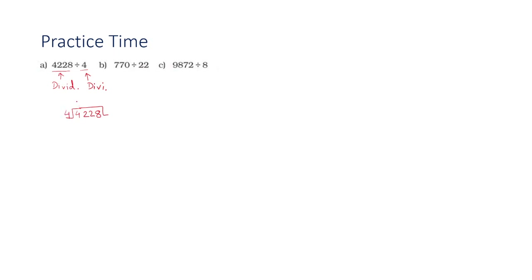How many times will 4 go in 4? You will be taking the first digit of the dividend. 4 times 1 equals 4, so the answer is 1. Now this 2 will come over here. How many times will 4 go in 2? The answer will be 0 times, so I will be writing 0 over here, and here we will be getting 2. Now this 2 will come here. How many times will 4 go in 22? The answer is 5 times, so I am writing 5 over here, and we will be getting 2.